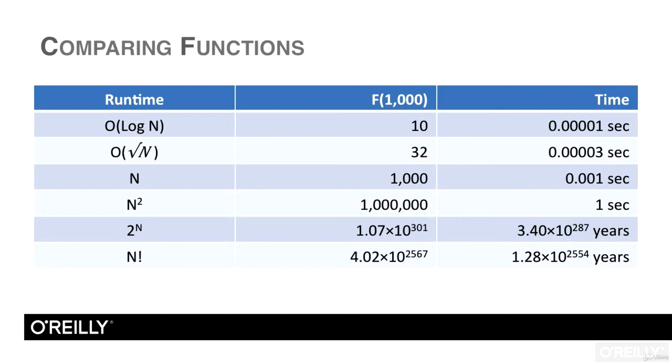You can see that the order log n and order square root of n algorithms finish almost instantly. The order n algorithm finishes in a thousandth of a second, which is faster than you could notice. Even if you increase the size of the problem, so n is bigger, say 100,000 or even a million, those algorithms will still be fast enough for most purposes.